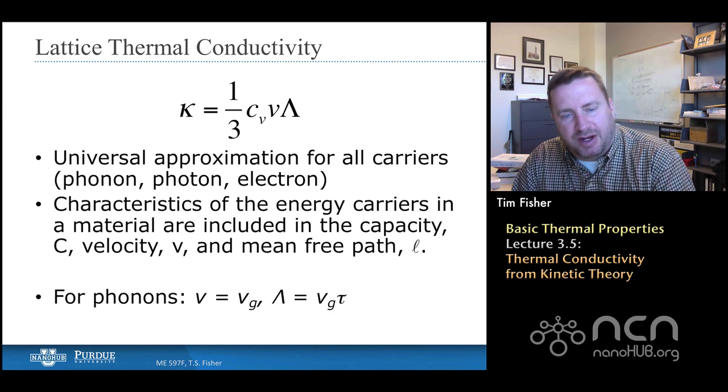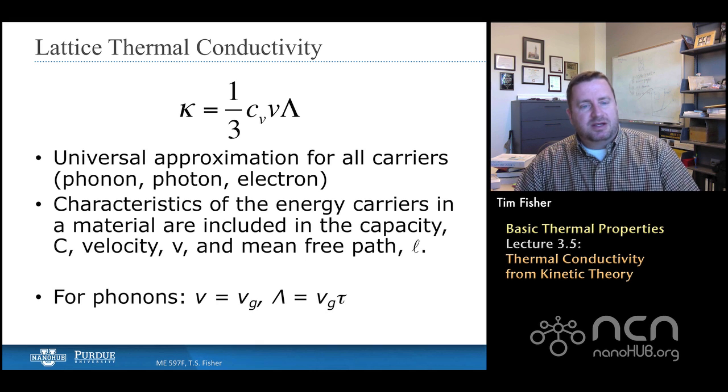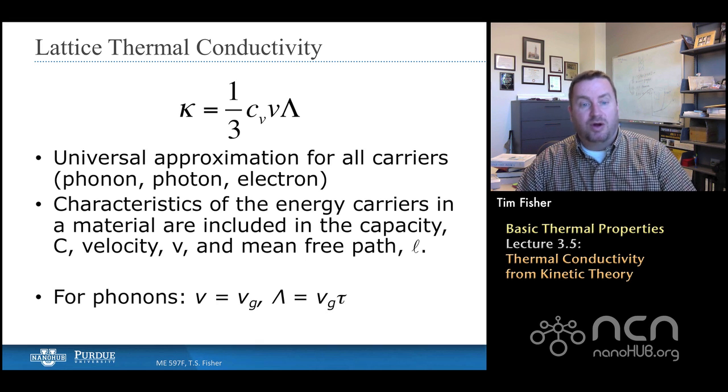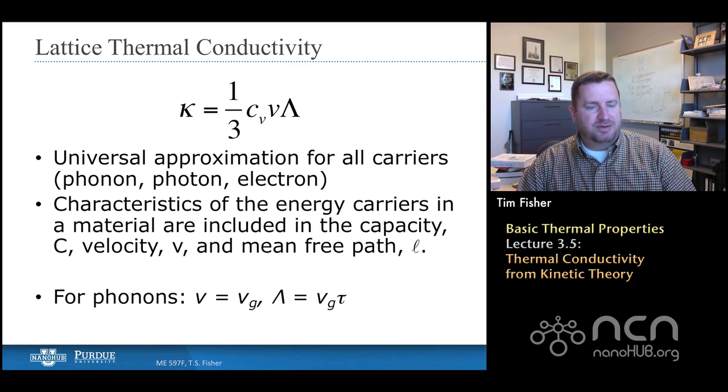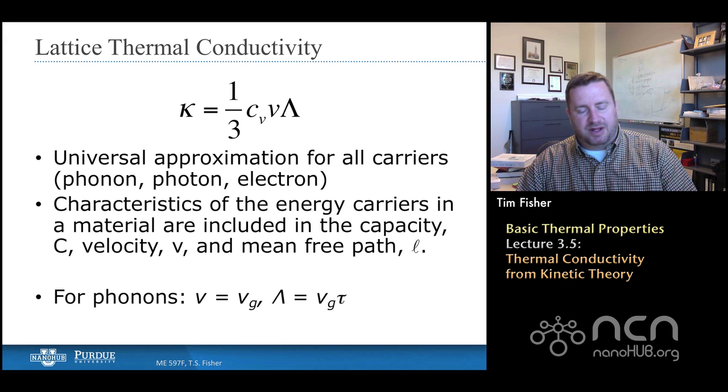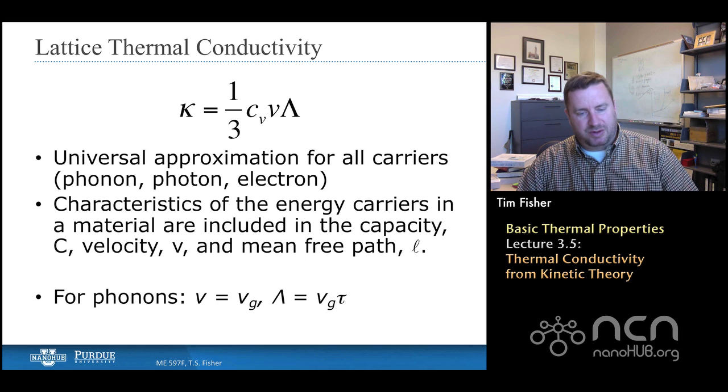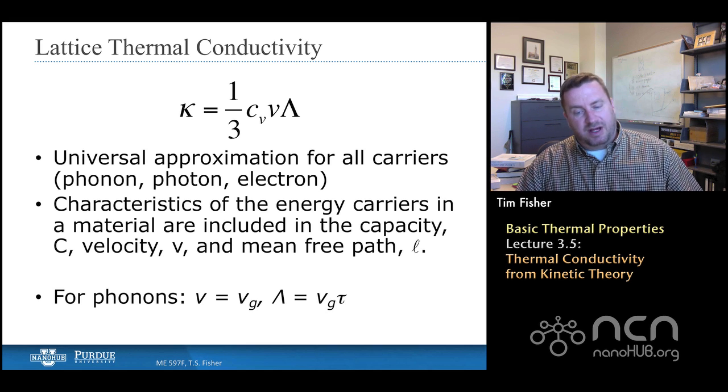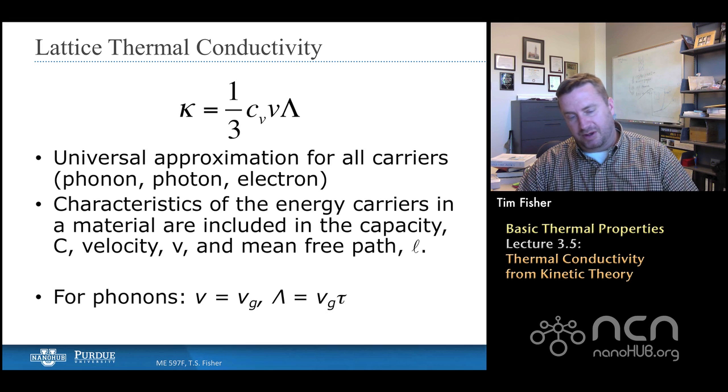So lastly, we get to the thermal conductivity, and to understand what it means, we will say that this is a universal approximation for all carriers—that would be phonons, photons, and electrons. We could define a thermal conductivity for photons if we had a highly scattering medium, for example. And it does rely on knowledge of a material, the material properties: the heat capacity, the velocity, mean free path. And for phonons, for velocity, the velocity that we'll use is the group velocity because that's the velocity with which energy transport occurs. And the mean free path will be the product of the group velocity and the scattering time. And the scattering time is the inverse of the scattering rate, which is something you'll also often hear.